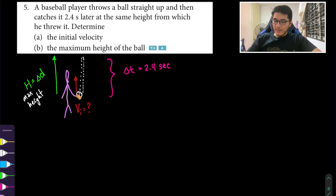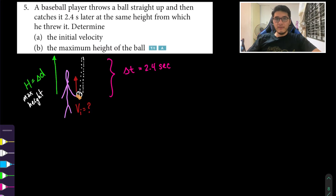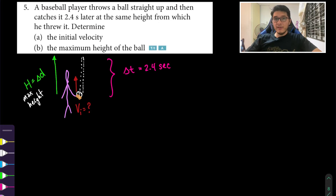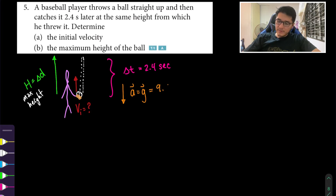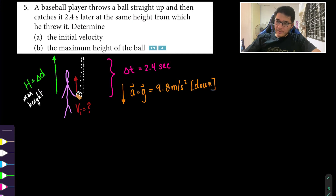Since the motion is in the y direction — vertical displacement — the acceleration is due to gravity the entire time. Even though the question doesn't state it, on planet Earth you assume acceleration is downward due to gravity, approximately 9.8 meters per second squared, pointing downward.